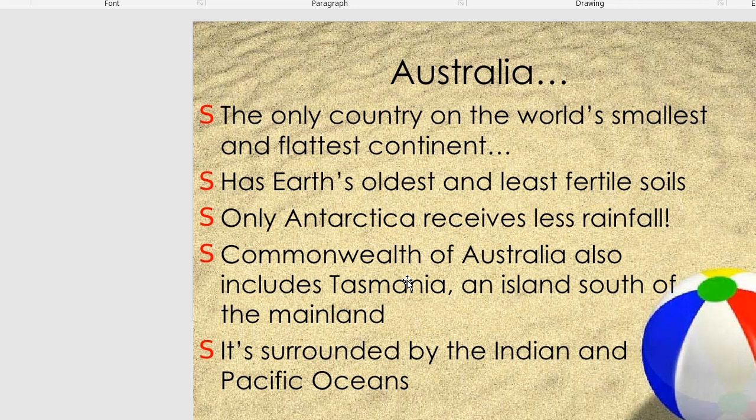Australia is surrounded by the Indian Ocean and the Pacific Ocean.